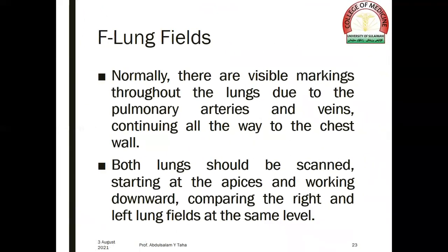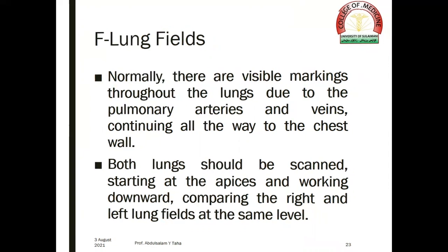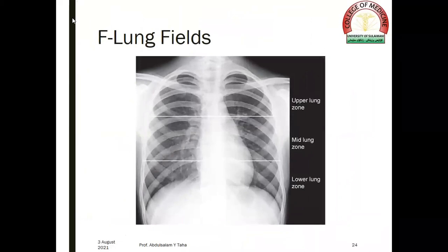Lung fields. Normally there are visible markings throughout the lungs due to the pulmonary arteries and veins continuing all the way to the chest wall. Both lungs should be scanned starting at the apices and working downward, comparing the right and left lung fields at the same level. The lung fields are divided into upper, middle, and lower zones. The upper zone is above an imaginary line at the level of the second costal cartilage, the middle zone between the second and fourth costal cartilage, and the lower zone below the fourth costal cartilage.